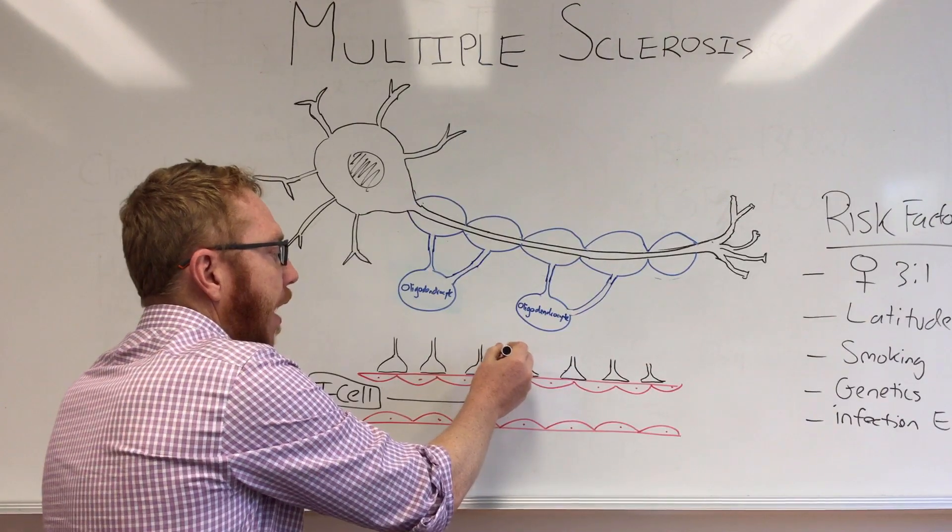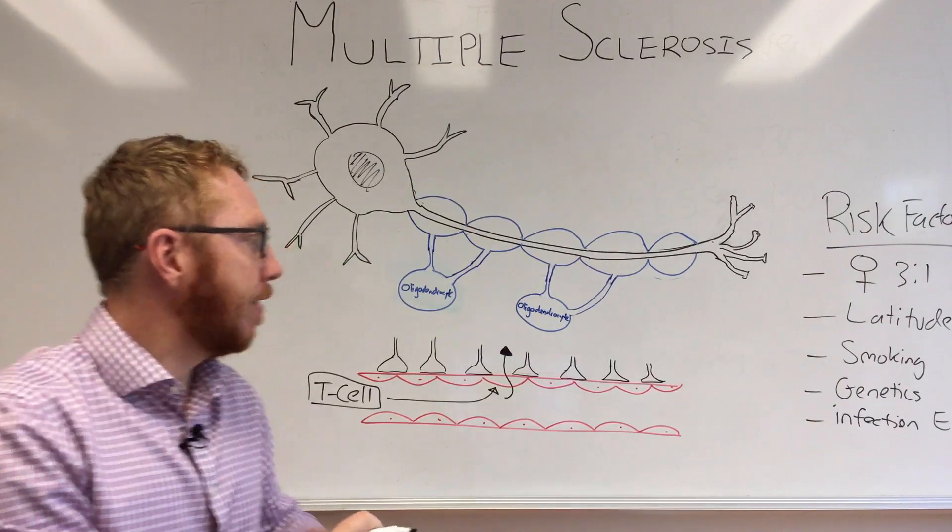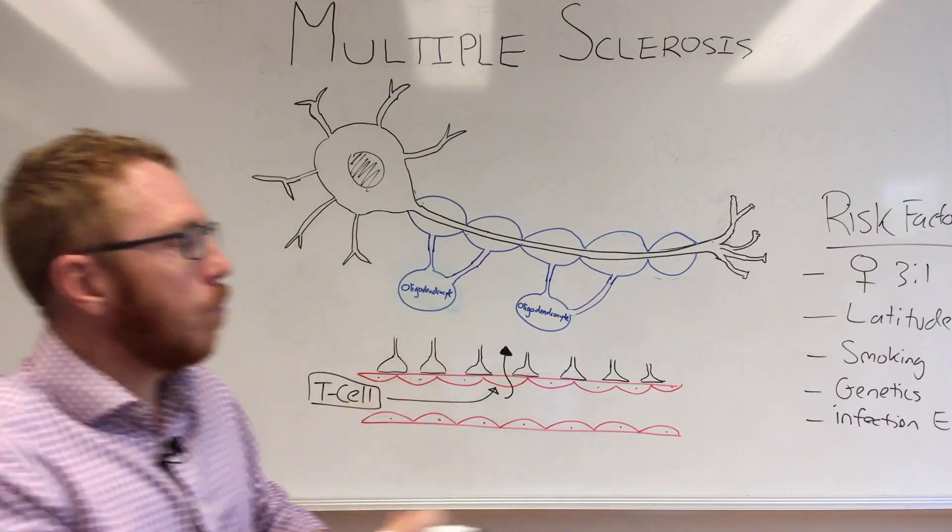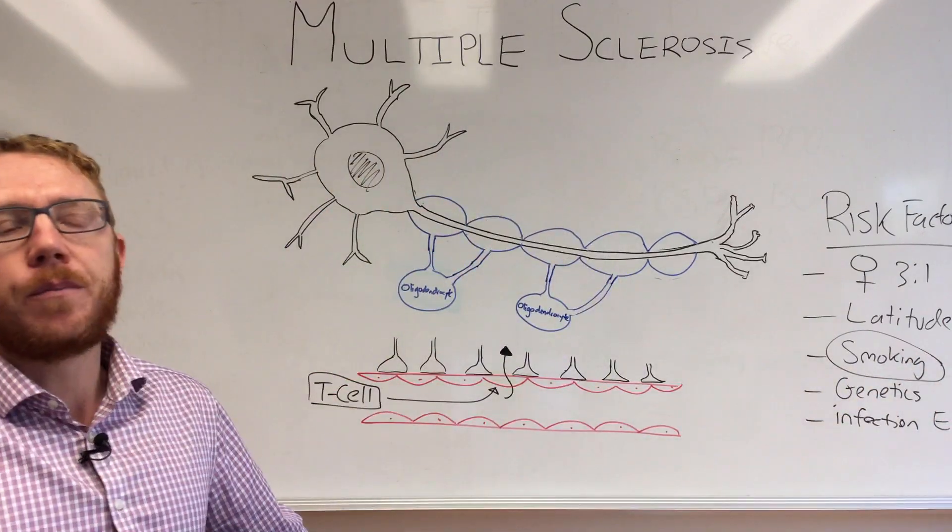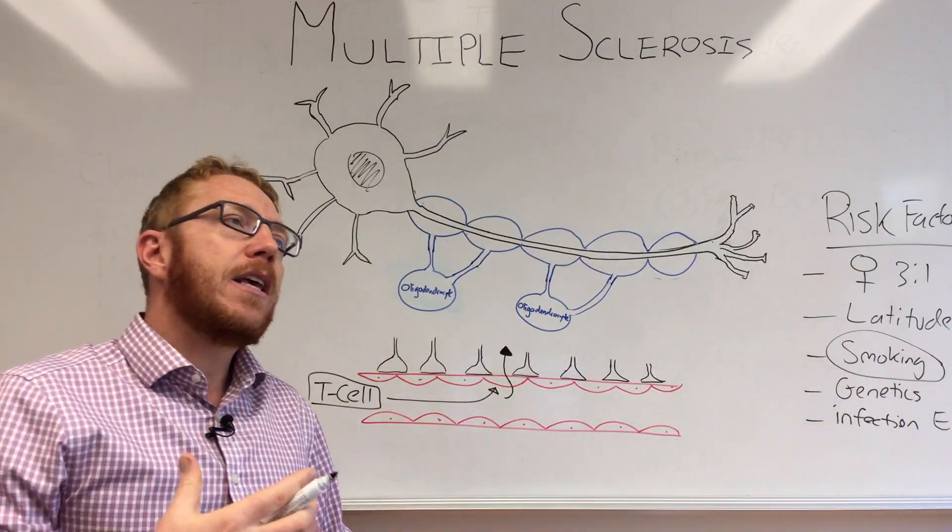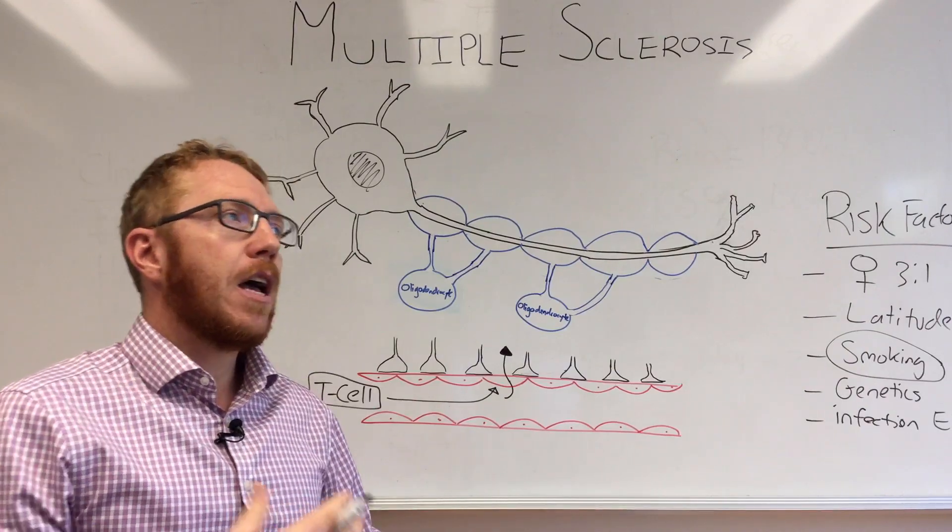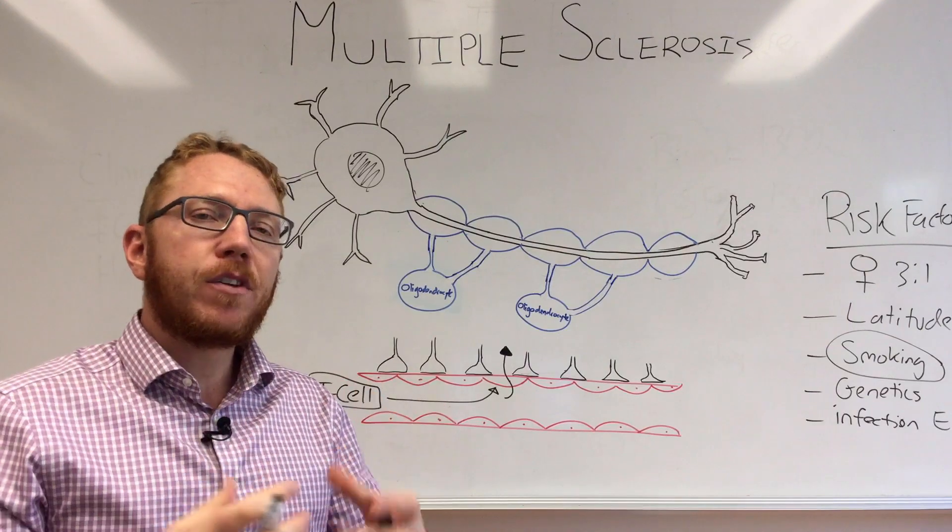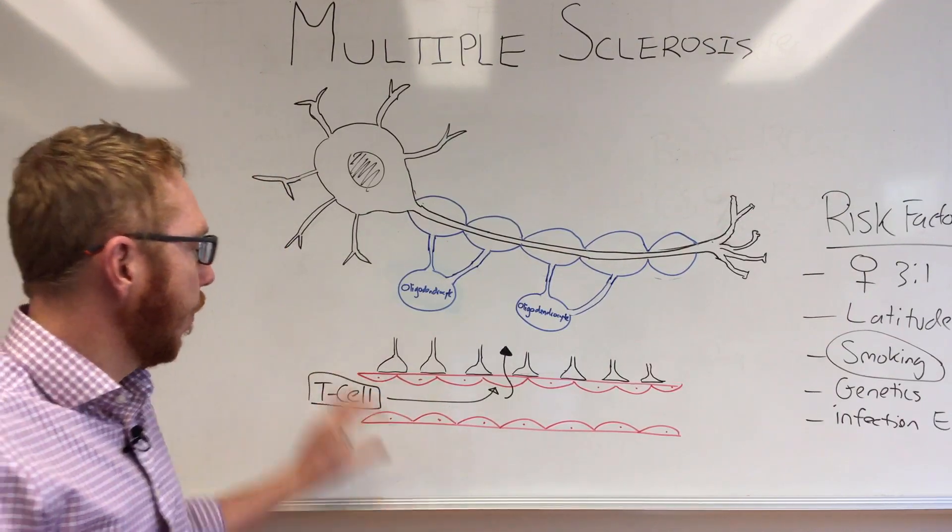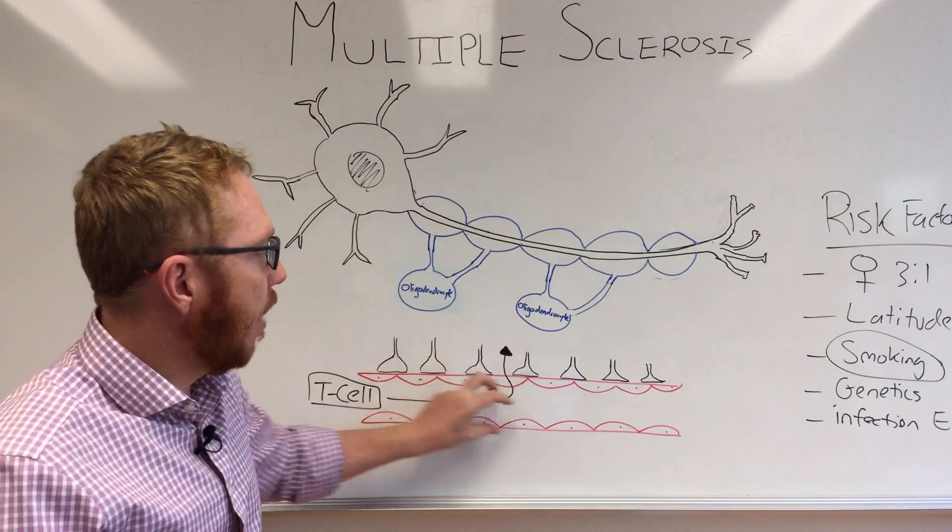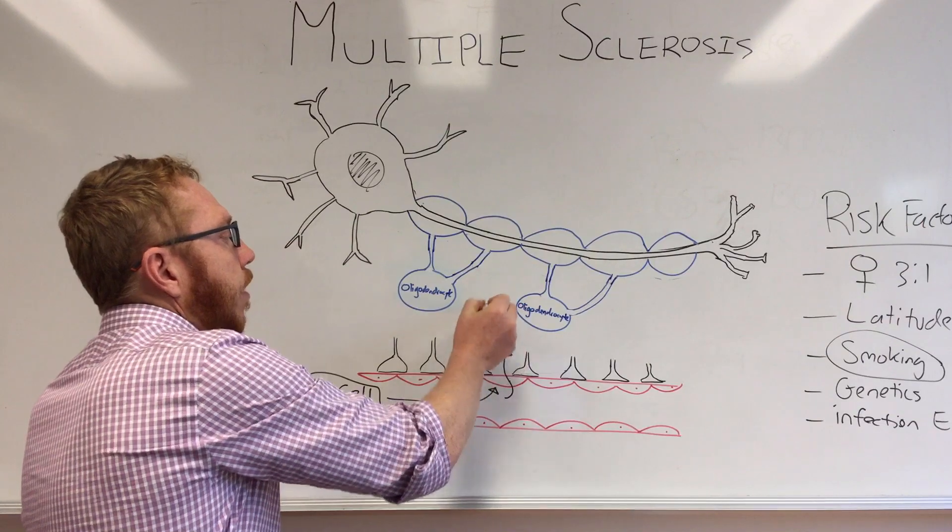For some reason the T cell once it's activated is able to breach through - there's a more complicated explanation for this but I think that's outside the scope of today. Another thing that will possibly put a person at a higher risk is their smoking. Smoking not only predisposes one to more autoimmunity but also it puts them into a pro-inflammatory state and this can also lead to the activation of the T cell.